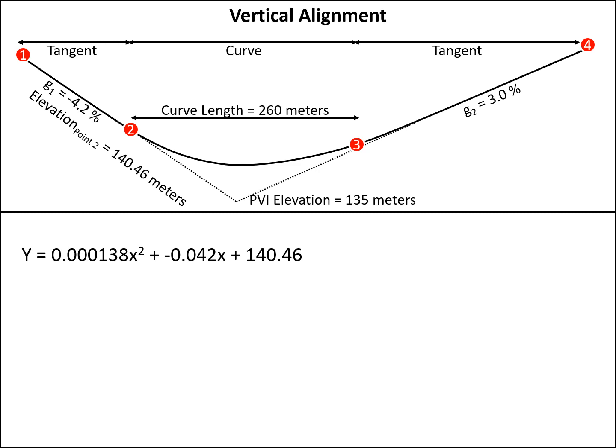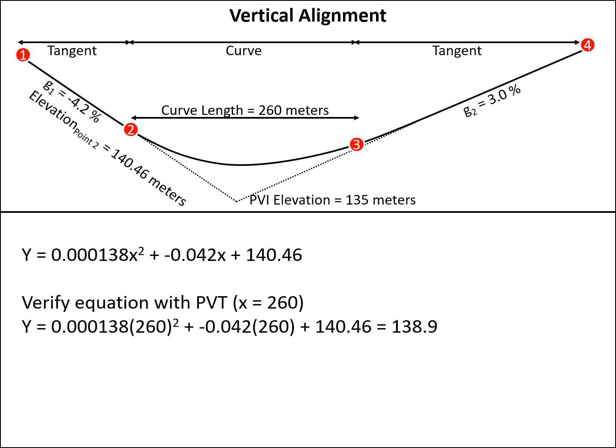Taking this equation, we can also try an example, and what we'll use as an example is actually a way to verify that our equation is working correctly. So we can do that by checking with the PVT, because we can understand its elevation both geometrically and with the parabolic equation, so that's what allows us to verify that our equation is correct. So using our parabolic equation, Y equals 0.000138 times 260 squared plus a negative 0.042 times 260 plus 140.46 gives us an elevation at this point of 260 meters from the PVC of 138.9 meters. And this is again the PVT elevation.